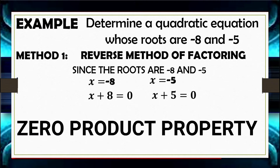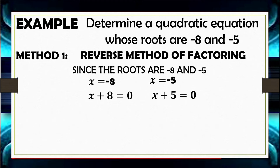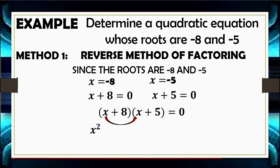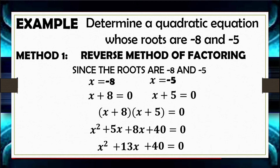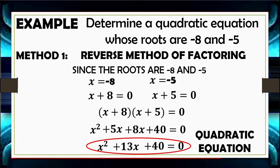Applying the zero product property, quantity X plus 8 times quantity X plus 5 equals 0. Using the FOIL method: X times X is X squared, X times 5 is 5X, 8 times X is 8X, and 8 times 5 is 40. Combining the linear terms 5X and 8X gives 13X. So the quadratic equation for roots negative 8 and negative 5 is X squared plus 13X plus 40 equals 0.